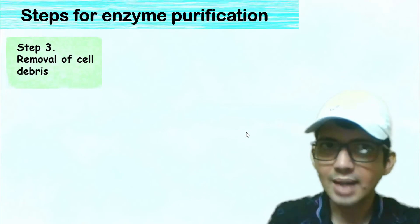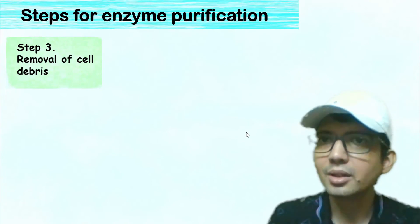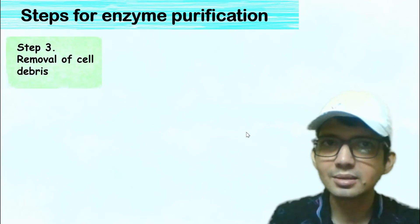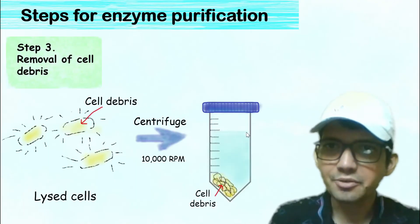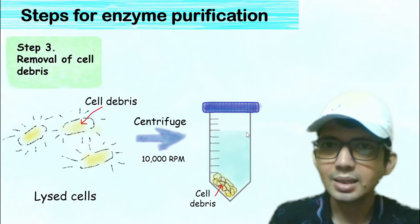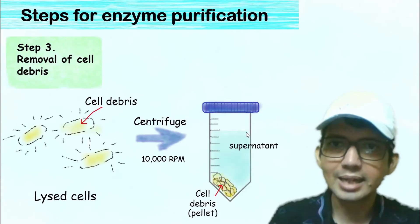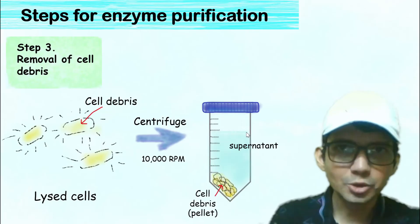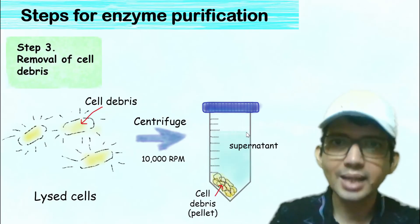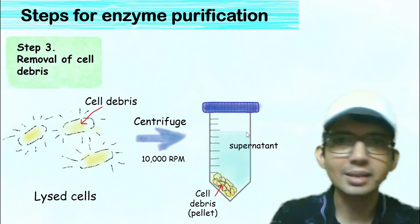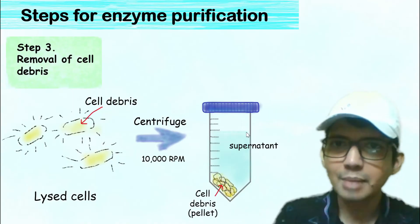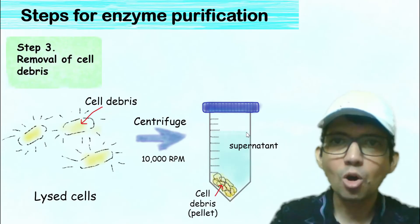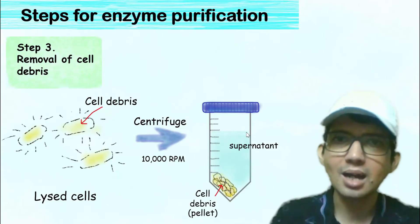Once the cells are lysed, the third step is removal of cell debris. For this, the sample is centrifuged at 10,000 rpm. The cell debris gets collected in the pellet, whereas the supernatant contains proteins and enzymes that were present in the cytoplasm. Besides proteins and enzymes, the supernatant will also have DNA and RNA.